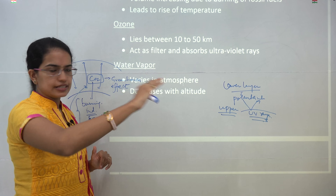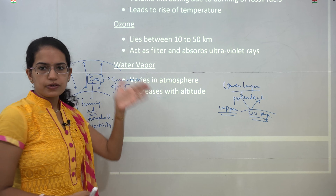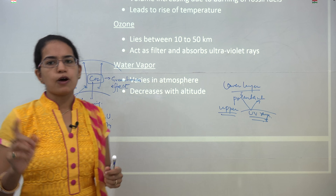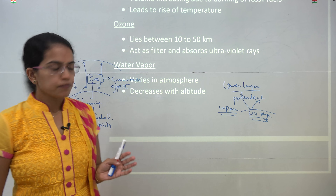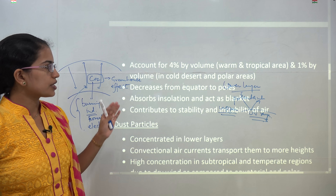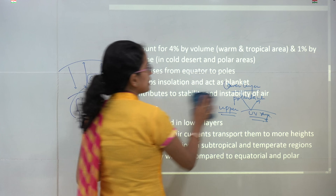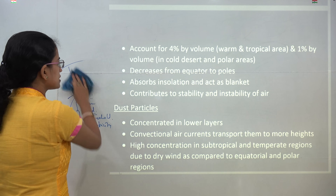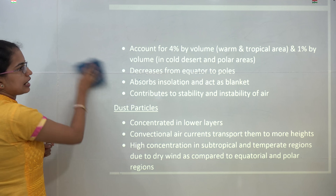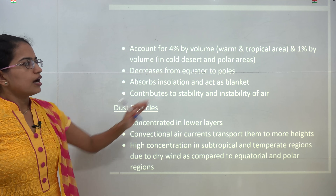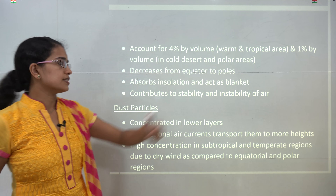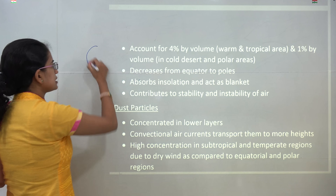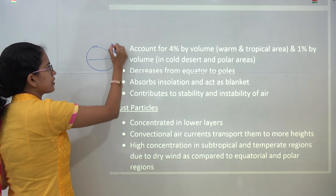We will talk about the layers of atmosphere as we move forward. The next component is water vapour. The amount of water vapour varies from place to place and decreases with altitude. In a warm tropical area, water vapour would be as high as 4%. In a cold desert or polar area, the content of water vapour would be less than 1%.